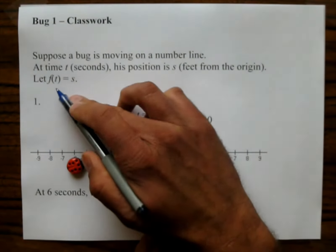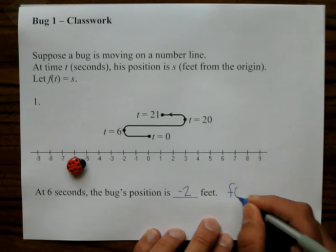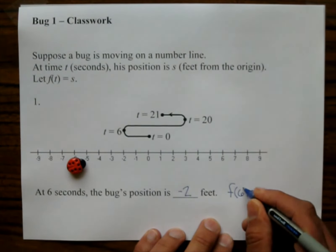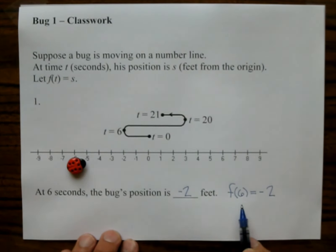Now we could use this function notation and say that f of 6 equals negative 2. The input is time, which is measured in seconds. And the output is position.